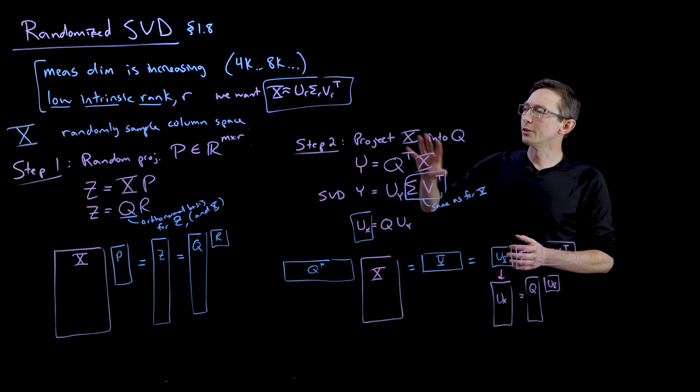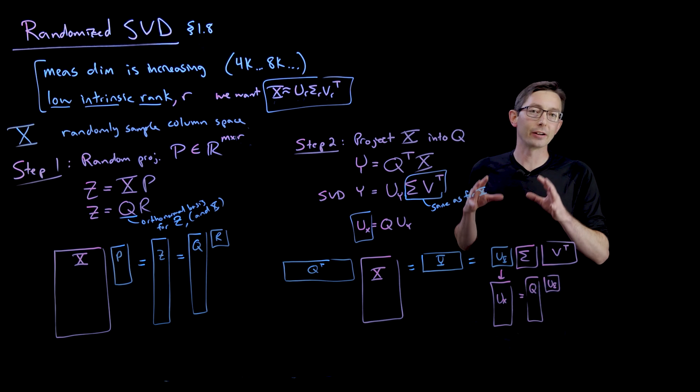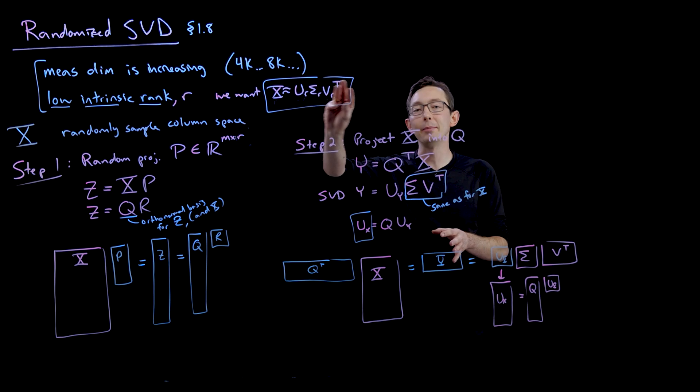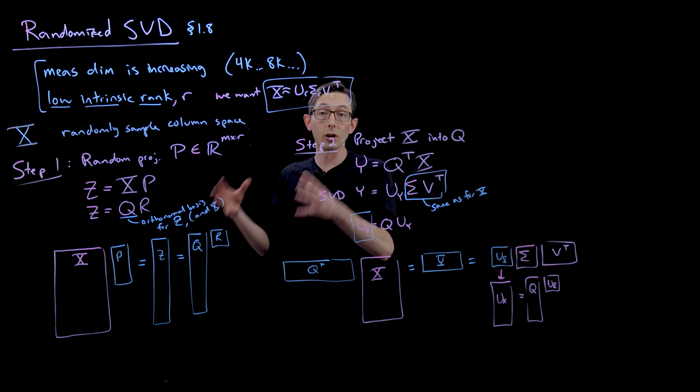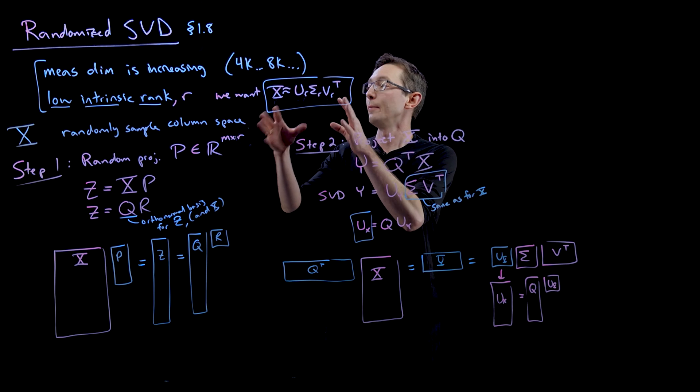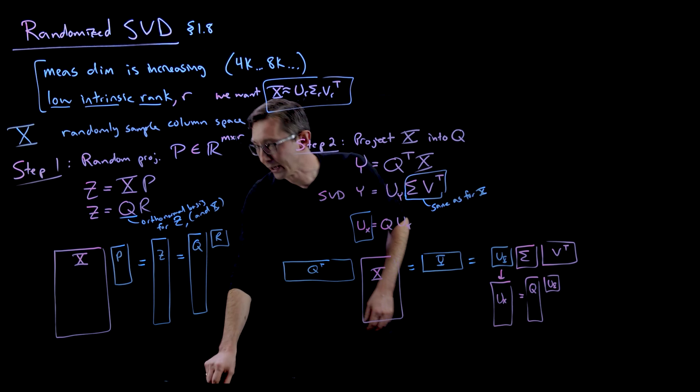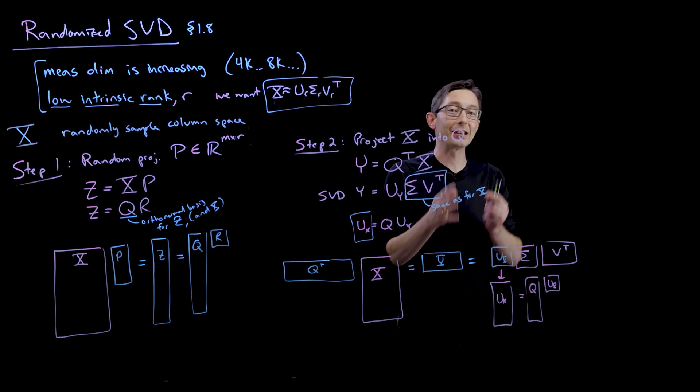Welcome back. In the last lecture I introduced the randomized SVD, which is a very computationally efficient algorithm to extract the dominant rank r singular value decomposition from a large data matrix X if we believe that it has low intrinsic rank r. Now in practice, you don't actually want your random projection matrix to have exactly r columns.